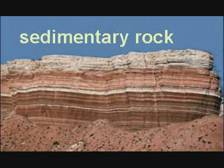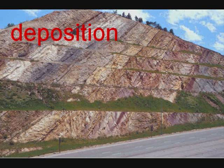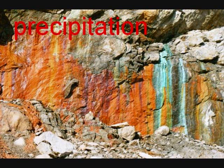So let's review. In making sedimentary rock, you can have either sandstone or carbonate. Usually, when sandstone is converted to sedimentary rock, there is a physical process called deposition. Further, within this deposition, you get a chemical change called cementation. Limestone or carbonate sedimentary rock is formed by a chemical change called precipitation.